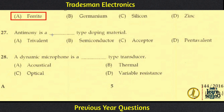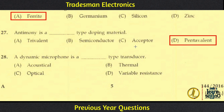Antimony is a pentavalent type of doping material. Antimony, Phosphorus, and Arsenic are all pentavalent doping materials. This is a basic concept.